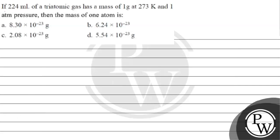Hello Bacho, let's read this question. The question says: if 224 ml of a triatomic gas has a mass of 1 gram at 273 Kelvin and 1 atm pressure, then the mass of 1 atom is — Option A: 8.30×10⁻²³ gram, Option B: 6.24×10⁻²³, Option C: 2.08×10⁻²³ gram, Option D: 5.54×10⁻²³ gram.